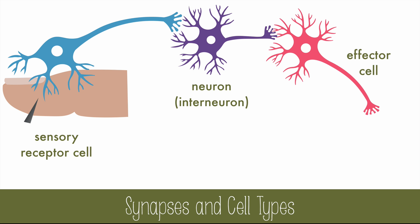In this example, the effector cell is going to signal a muscle cell, which would move this area of skin away from the source of pain. These three cell types together make a simple reflex arc, going from sensation to the central nervous system to an action.